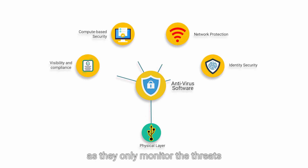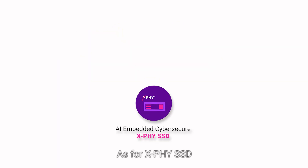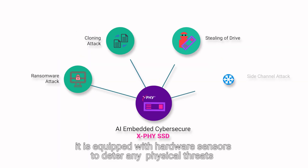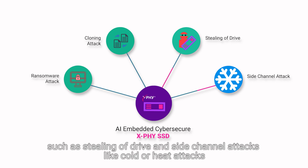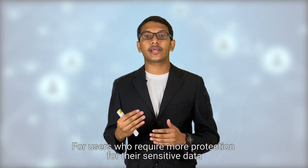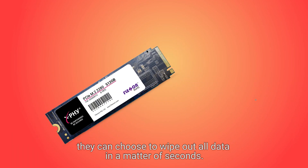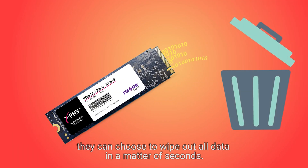Problem 3: physical protection. Lastly, antivirus software cannot prevent physical attacks as they only monitor threats at the network and application level. As for the X5 SSD, it is equipped with hardware sensors to deter any physical threats such as theft and side-channel attacks like cold or heat attacks. For users who require more protection for their sensitive data, they can choose to wipe out all the data in a matter of seconds.